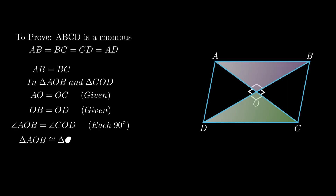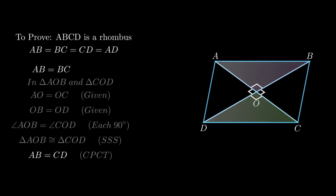Therefore, by the side-angle-side rule, triangle AOB is congruent to triangle COD. By corresponding parts of congruent triangles, side AB equals side CD.